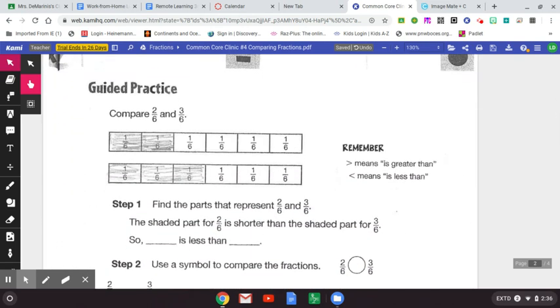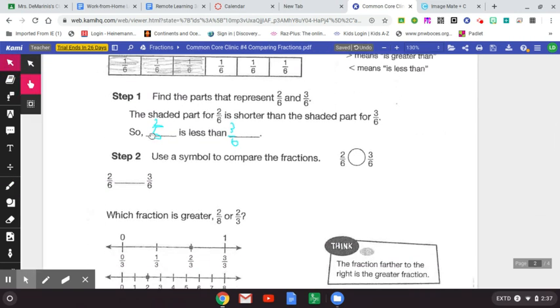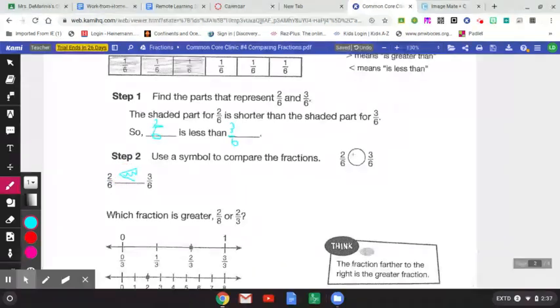Let's try some guided practice. Compare two-sixths and three-sixths with a model. We can do that. Here's two-sixths and here's three-sixths. First find the parts that represent two-sixths and three-sixths and then take a look. The shaded part for two-sixths is shorter than the shaded part for three-sixths. So we say that two-sixths is less than three-sixths. Now, to write the number sentence, you have to use a symbol to compare these fractions. Because we said two-sixths is less than three-sixths, remember, this means is less than. The open part of the mouth eats the bigger fraction. Two-sixths is less than three-sixths.